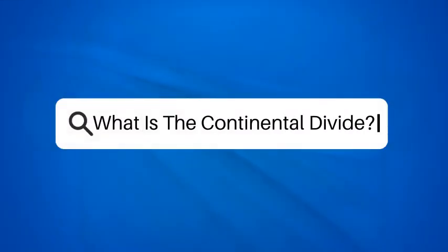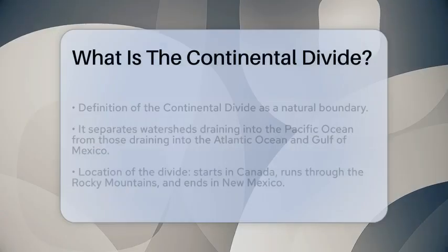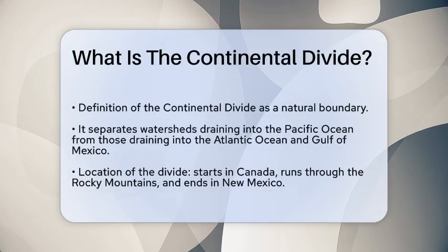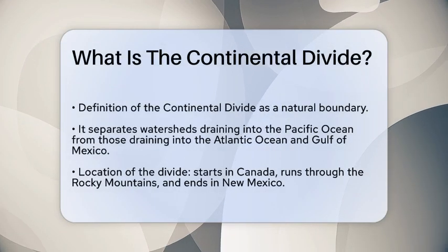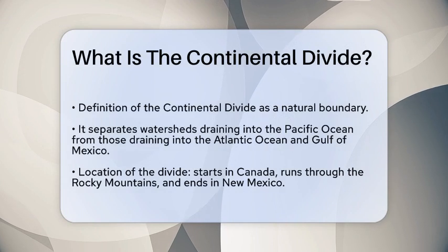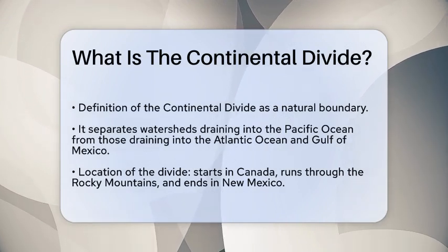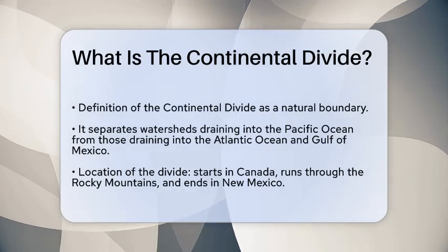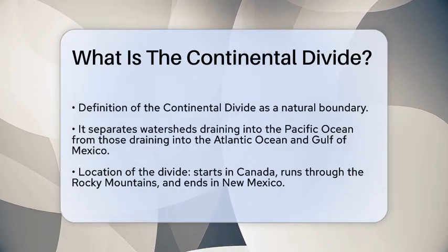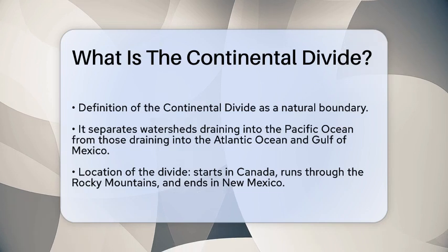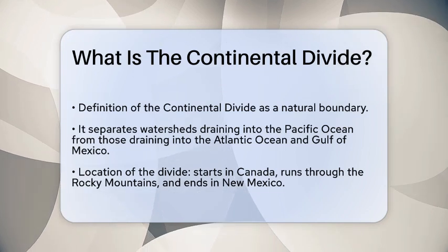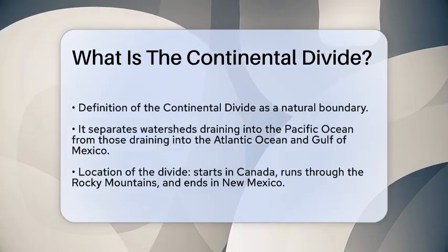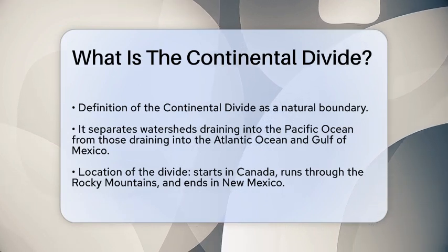What is the Continental Divide? Imagine standing on a mountain peak, surrounded by breathtaking views of rivers flowing in different directions. This natural boundary, known as the Continental Divide, plays a crucial role in determining the flow of water across the continent. But what exactly is it?